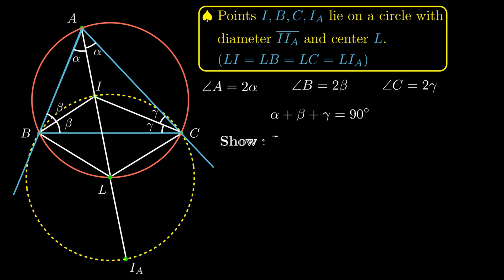We first prove that the lengths LI and LB must be the same, and then the rest of the equality follows by a similar argument. Showing these two lengths are the same is equivalent to showing that angles IBL and LIB are equal.